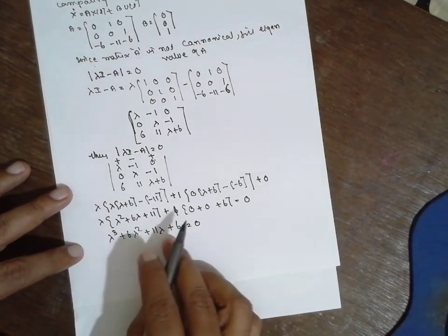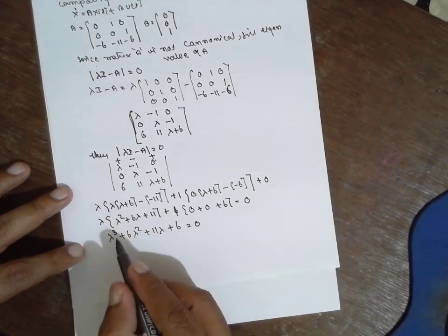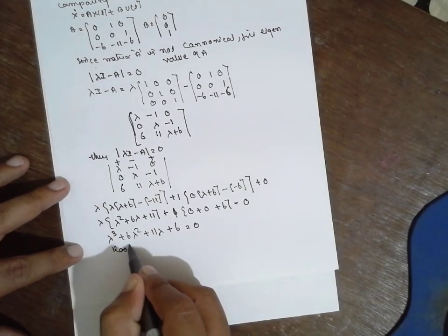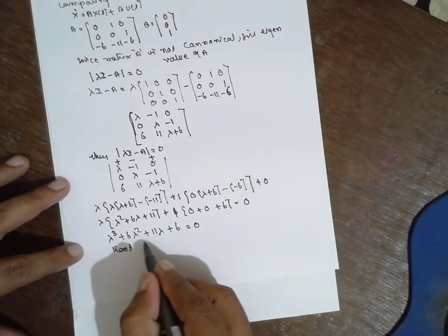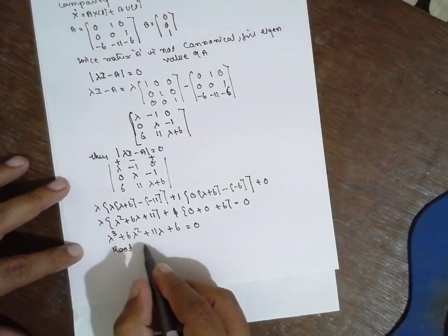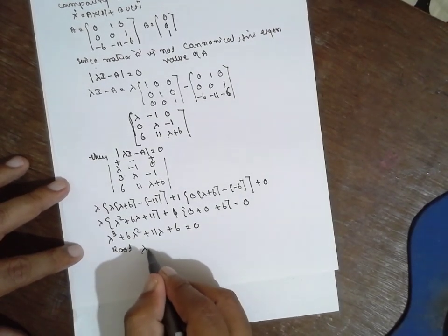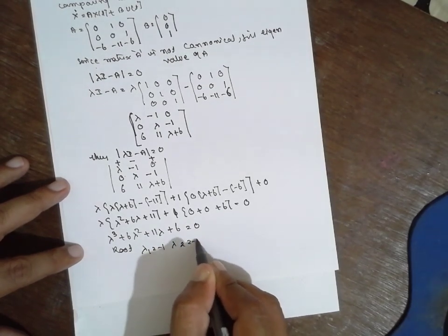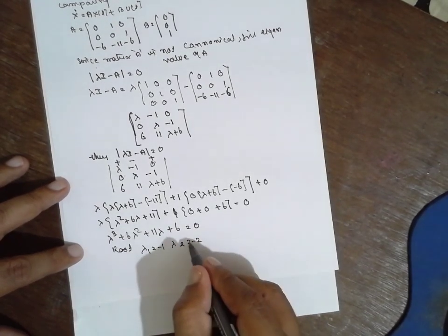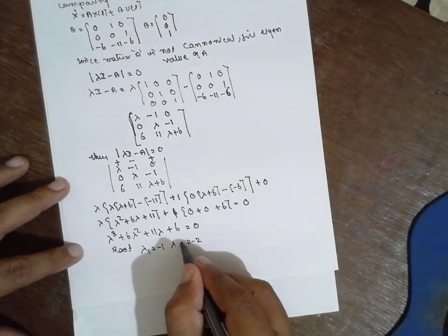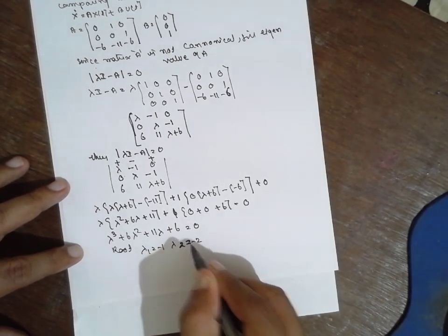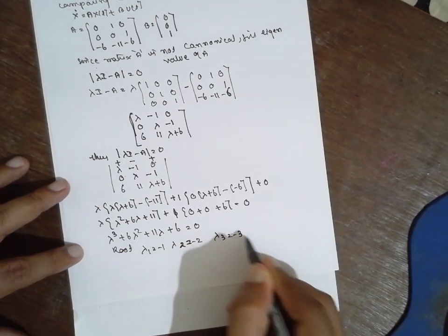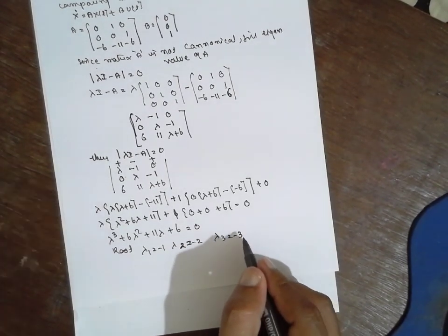Now we find the roots of λ³ + 6λ² + 11λ + 6 = 0. The roots are: λ1 = -1, λ2 = -2, λ3 = -3. After finding these roots, we use them as eigenvalues to construct the Vandermonde matrix.